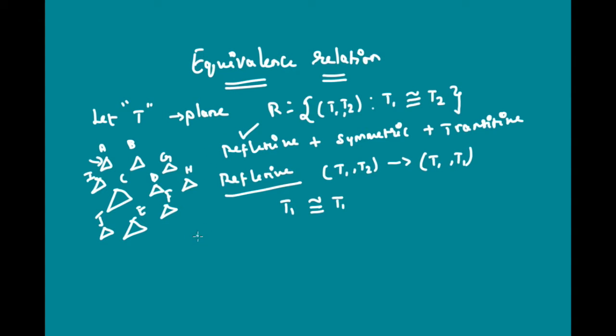Now let us see whether it is symmetric. In symmetric, we need to assume that the relation R stands good for T1, T2, and we need to prove that the relation R stands good for T2, T1 as well. So by our assumption, T1 is congruent to T2. If this is the case, then definitely T2 is congruent to T1 as well, and hence R is symmetric as well.